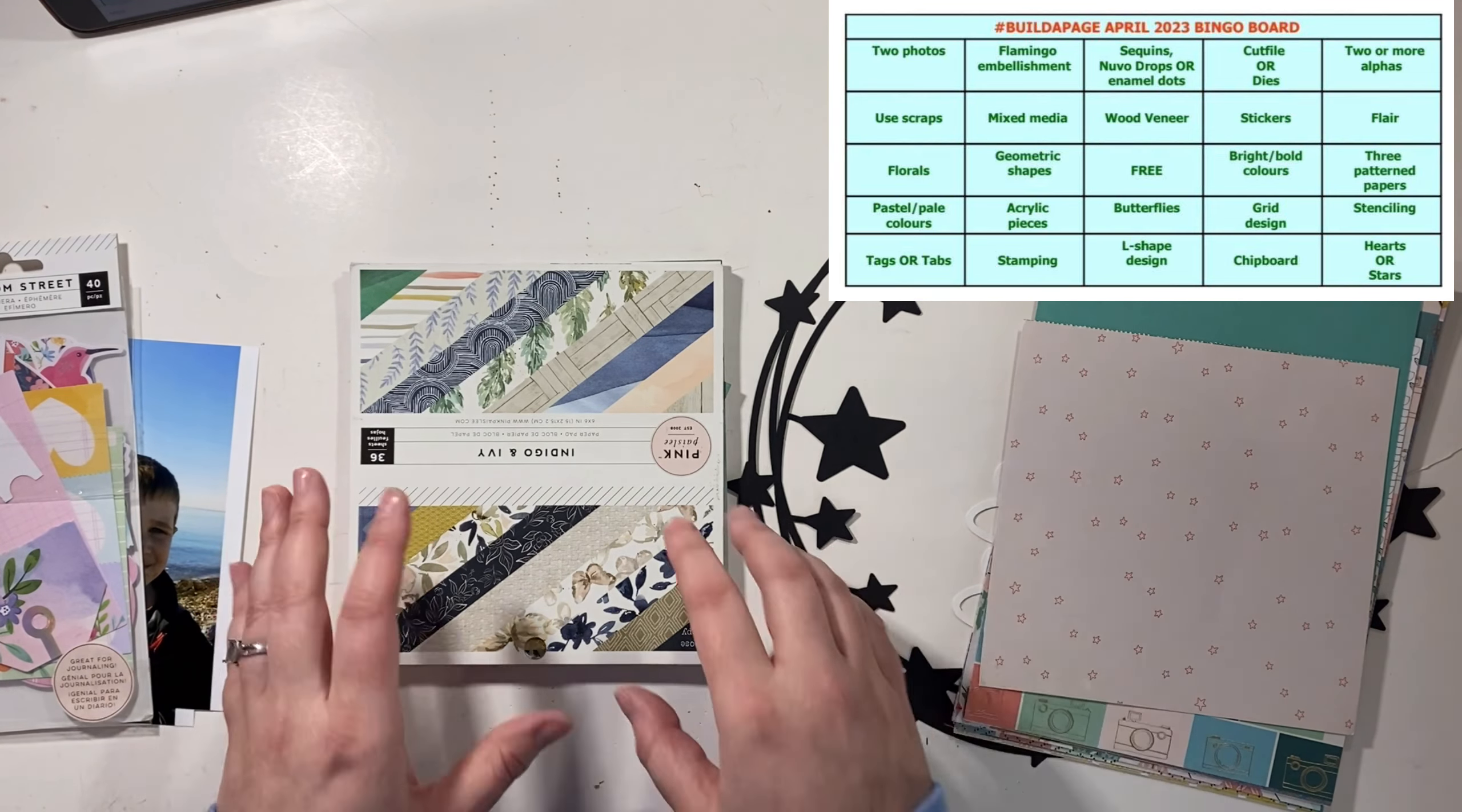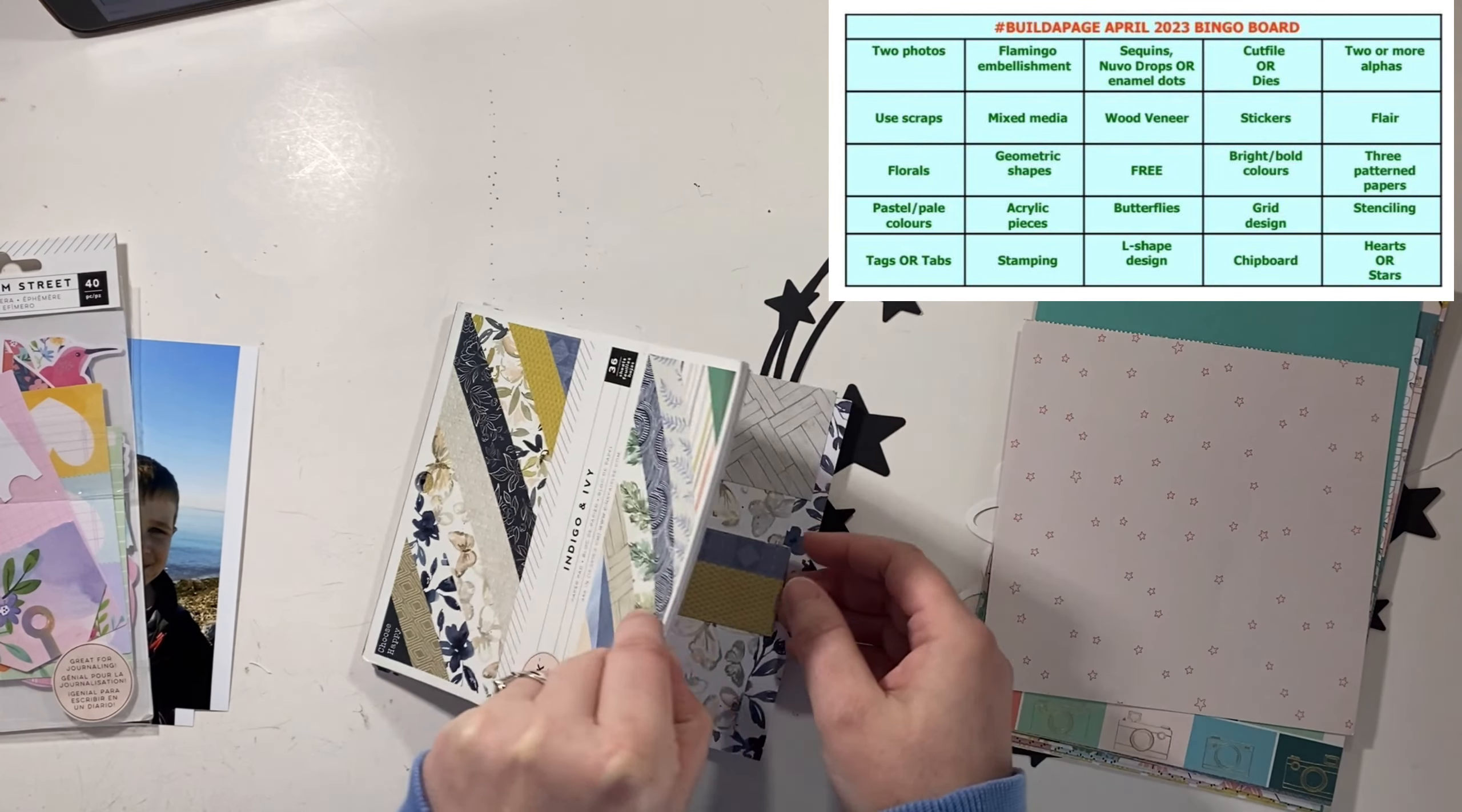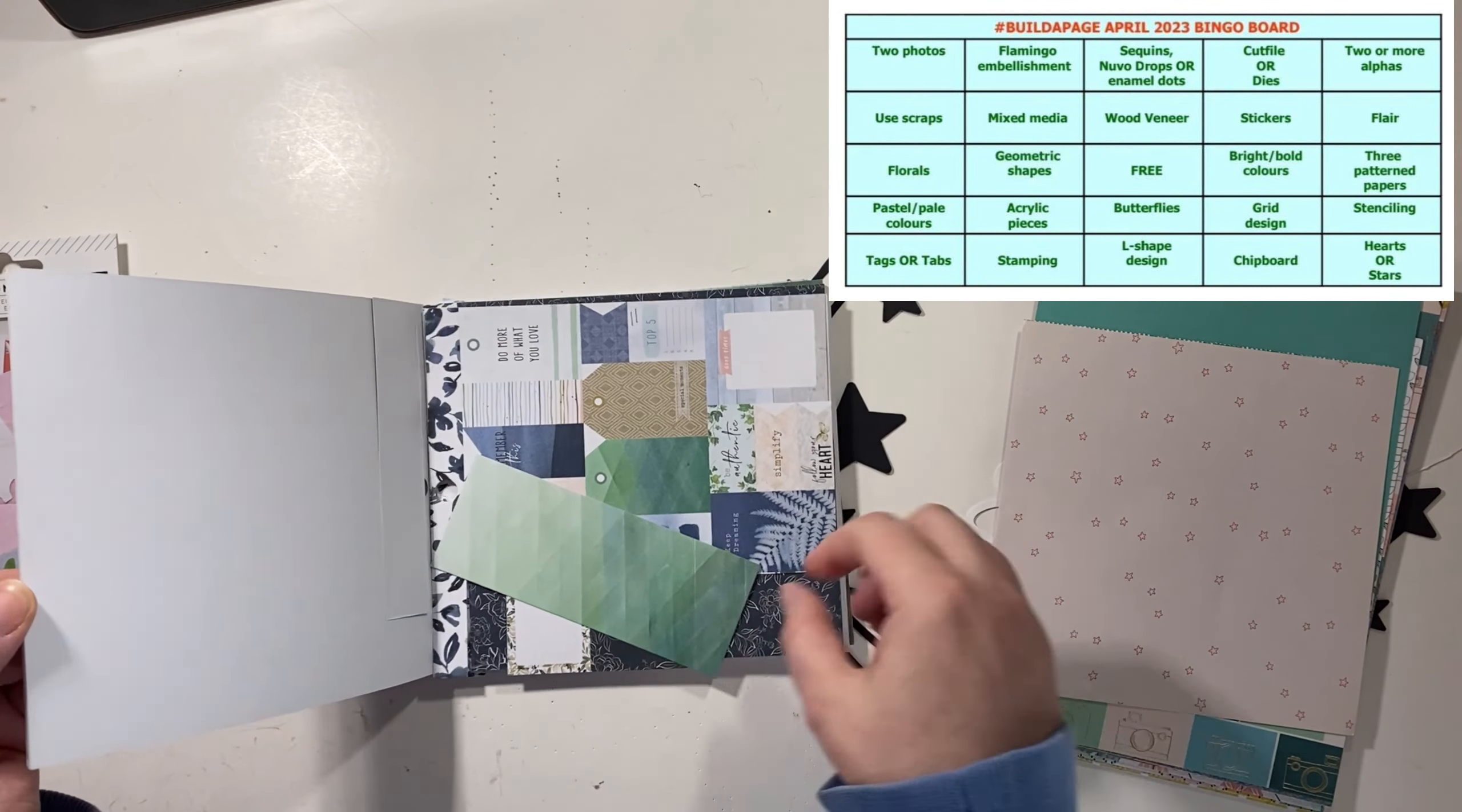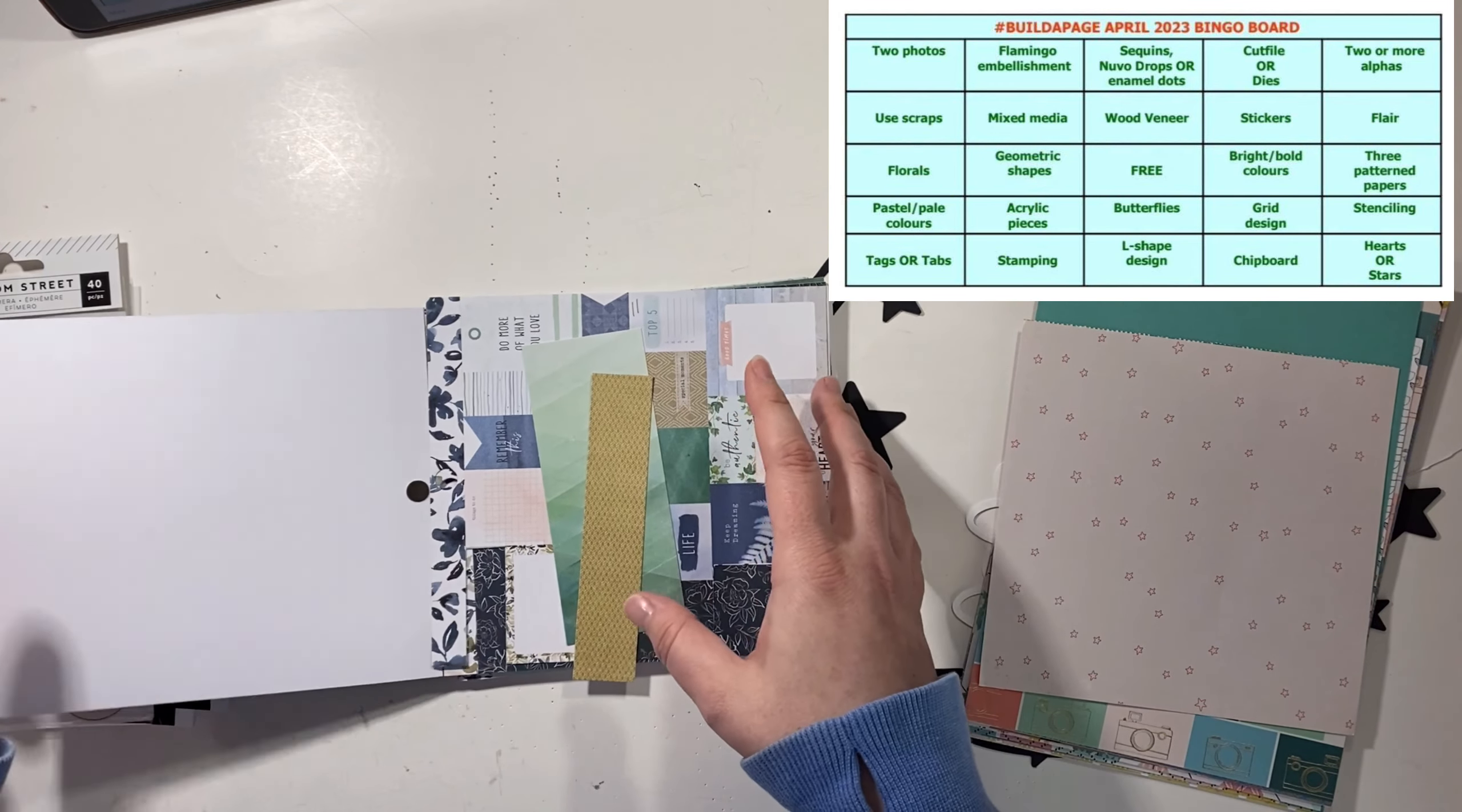And then I also thought for the scraps I'm using this Indigo and Ivory. Now it's not super pastel, but it does have some pale colors in it and intermixed in it, so I thought I'd grab that. It also has tags and I've got scrap pieces in here, so I'm going to kind of do that all together as one thing.